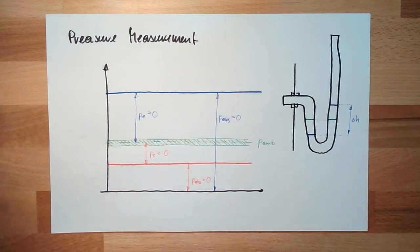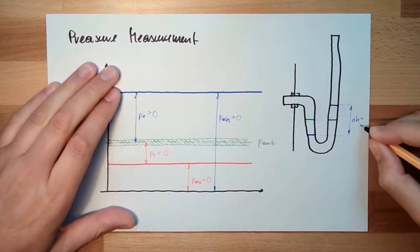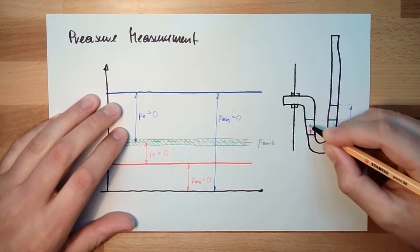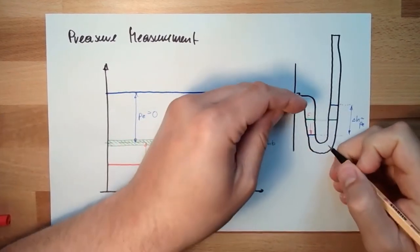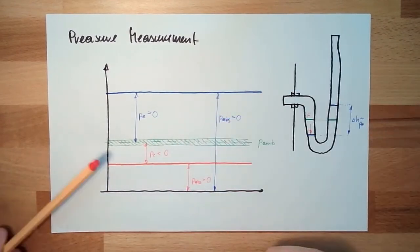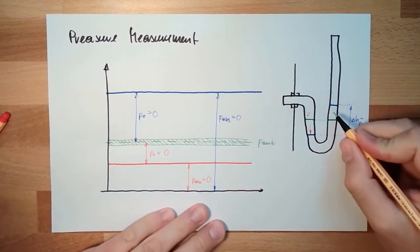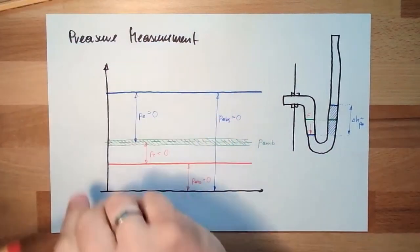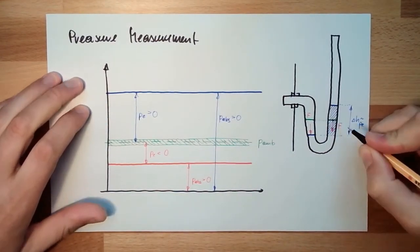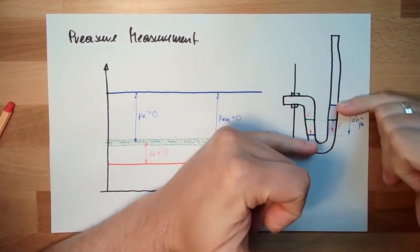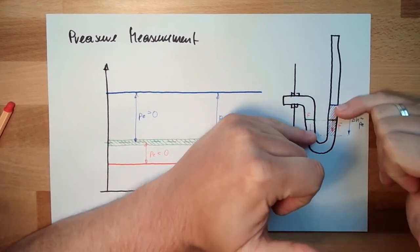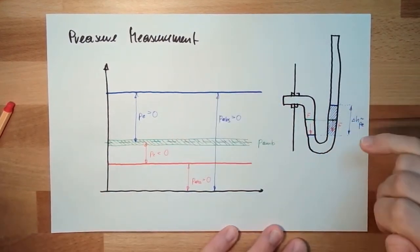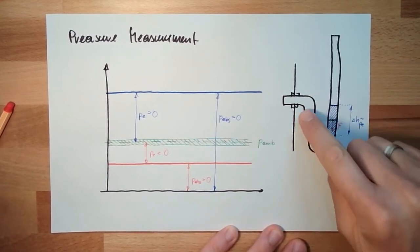Why is that? This height difference is proportional to PE. Because of the pressure here at this area, I have some force from the pressure. Pressure multiplied by area is the force. This amount of liquid has a certain mass, and this mass produces also a force. Once those two forces are equal, it will be stable. So this delta H, this delta height, is proportional to the pressure PE here.